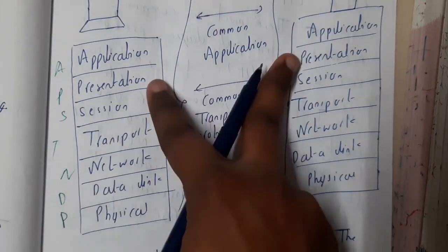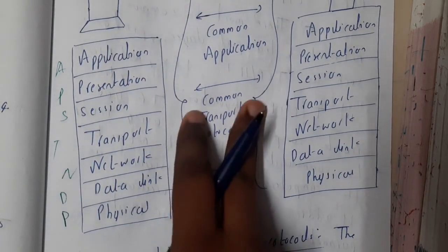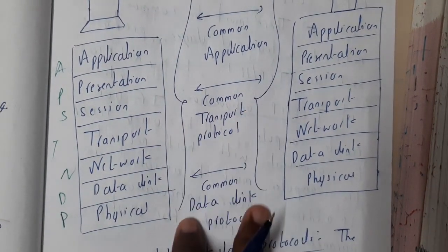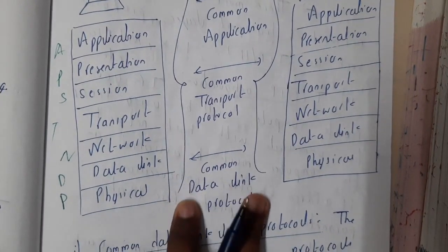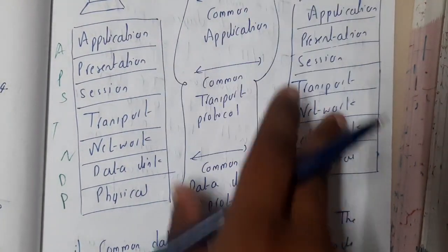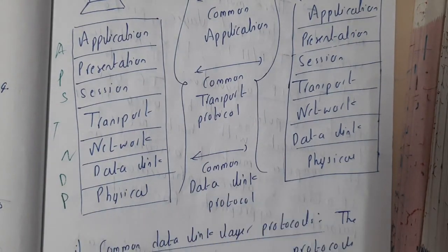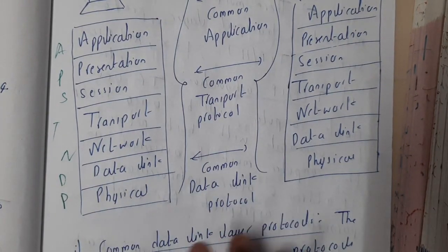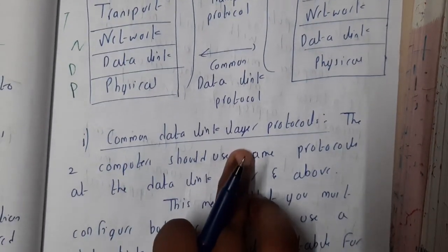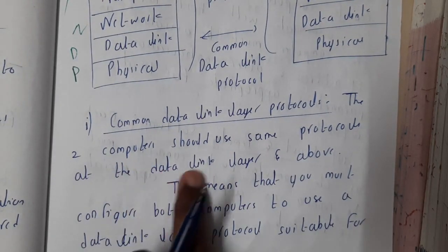Both the application layers should be the same on each system. Similarly, transport layer protocols should be the same, and the data link protocol should also be the same. If these three conditions are satisfied, then we can say that security is maintained to a degree.